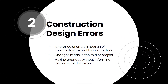Construction Design Errors. Sometimes contractors ignore the potential errors in the design of the project, which ultimately leads to cost overrun in construction projects. It is because errors in design need to be corrected during the construction phase, and for this, many changes in the architecture might be made to eliminate defects. Generally, the design errors are made intentionally while the project is in the planning or architectural design phase. But sometimes contractors make changes in the project without informing the project owners, which is critical damage to the construction projects.